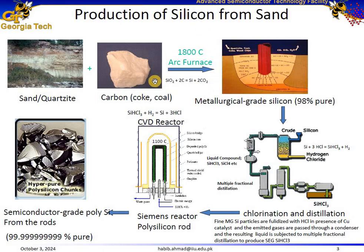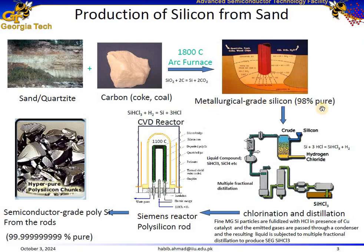The high temperature causes a reduction reaction. Silicon dioxide is reacted with either carbon or silicon carbide, reducing oxygen from silicon dioxide. We can see that the products are silicon and carbon dioxide.